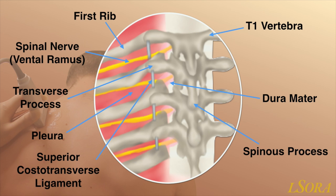An important structure is the superior costo-transverse ligament which traverses from the rib below to the transverse process above. This provides the gateway into the paravertebral space. Deep to the costo-transverse ligament, you will find the spinal nerve lying within the paravertebral space. Note the close proximity of the pleura.